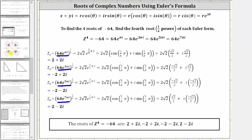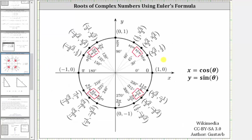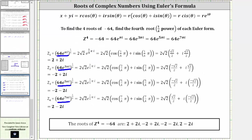Going to the unit circle, here we have the four angles, where x equals cosine theta and y equals sine theta. Using these four points on the unit circle, we can determine all eight trig function values, which have already been computed. On the right side of the screen, we have all the trig function values.